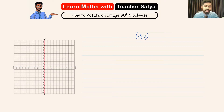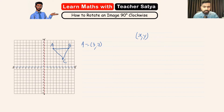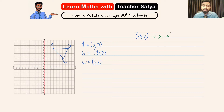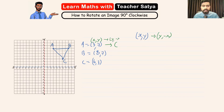For example, I'm going to draw a triangle at these points and name them point A, point B, and point C. Point A is at (3, 7), point B is at (8, 7), and point C is at (6, 3). Now when we do a 90 degree clockwise turn from the origin, our (x, y) will change to (y, -x). So y will be the new x-axis and negative x will be the new y-axis.